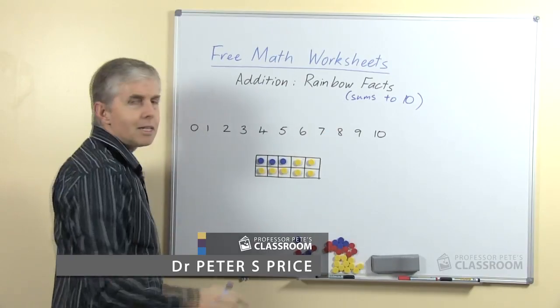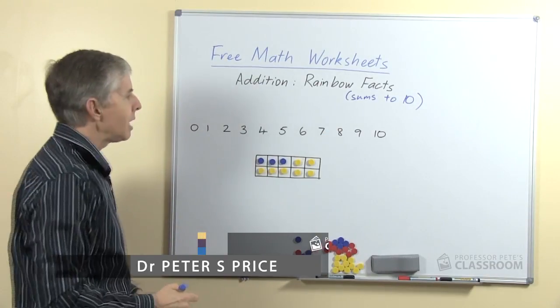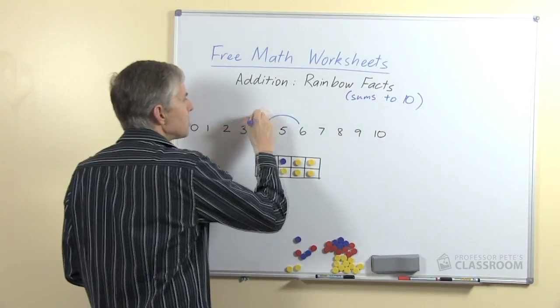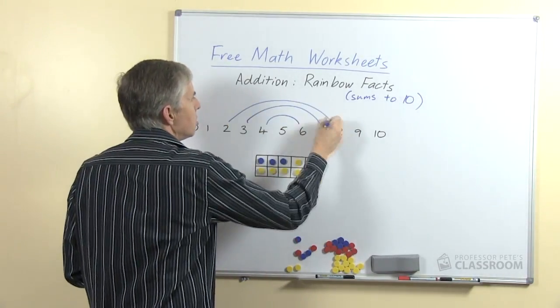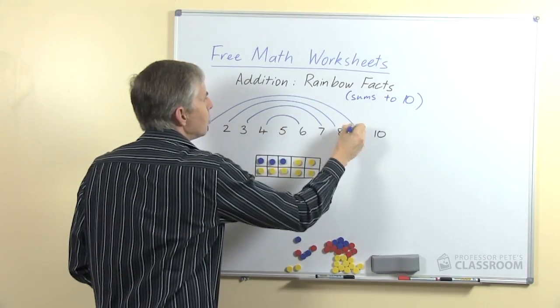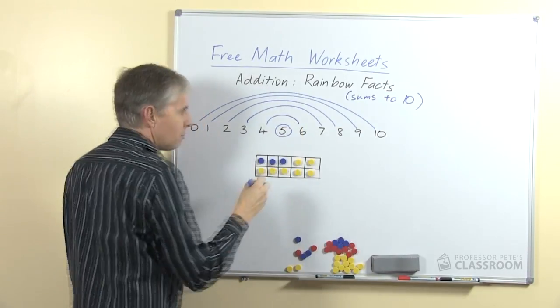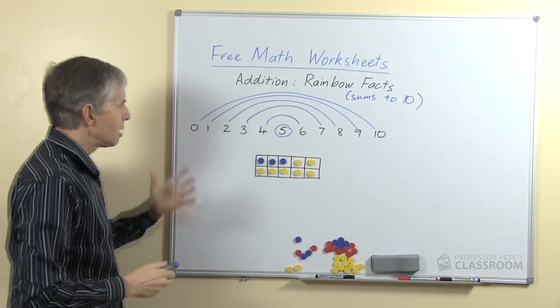So if we write the numbers out from 0 to 10 in a line horizontally and then join together the pairs of numbers which add together to make 10, whose sum is 10, we can see that we get this nice rainbow sort of effect. 5 is on its own in the middle of course because of double 5.